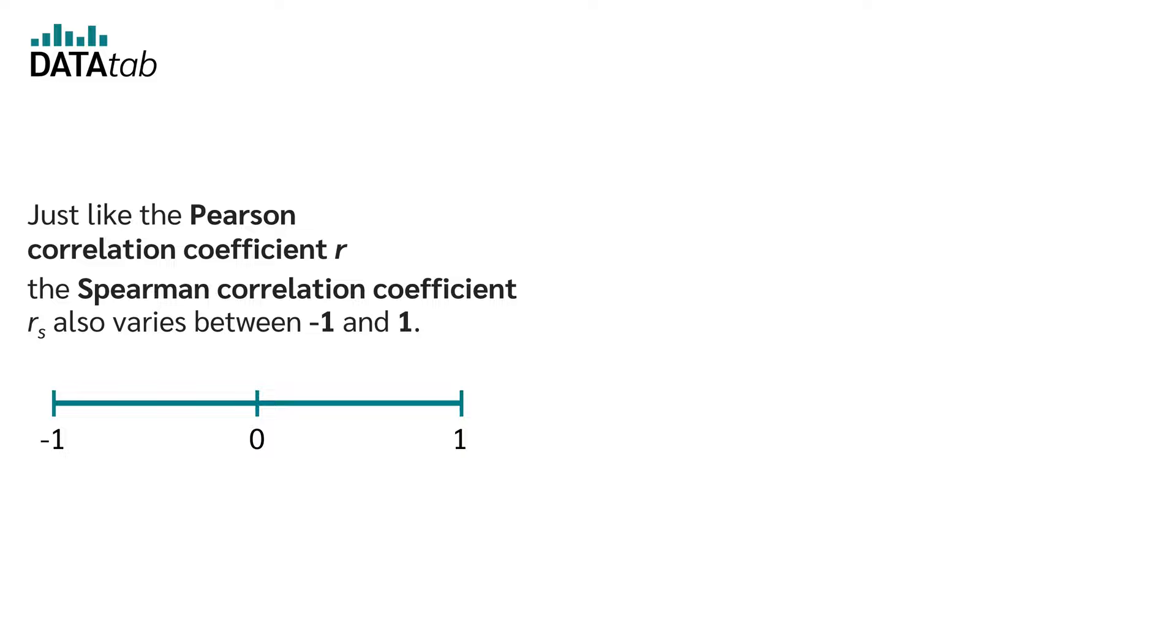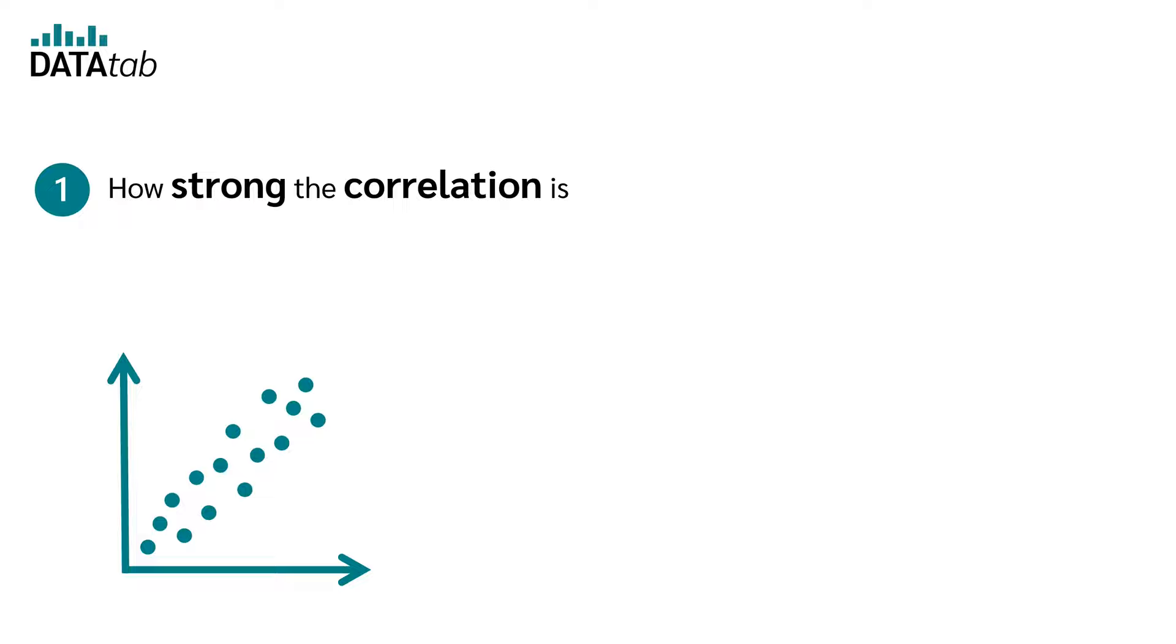Just like the Pearson correlation coefficient r, the Spearman correlation coefficient r_s also varies between minus 1 and 1. With the help of the coefficient, we can now determine two things. Number one, how strong the correlation is. And number two, in which direction the correlation goes.